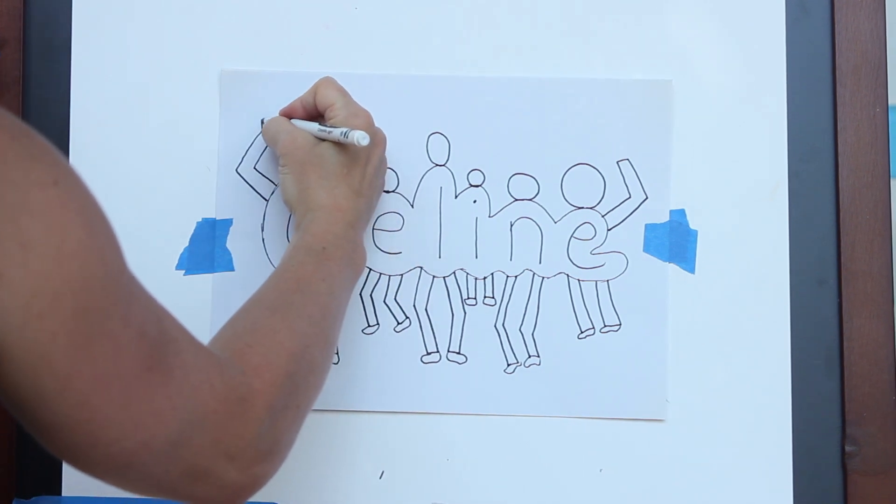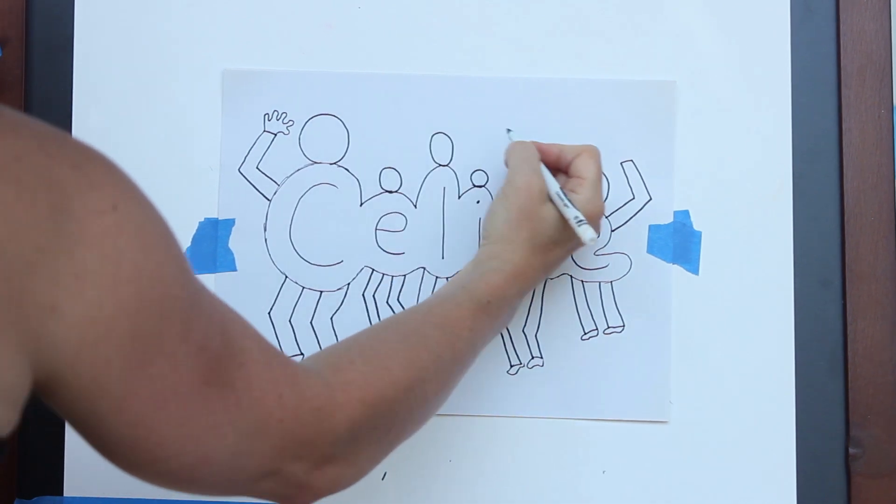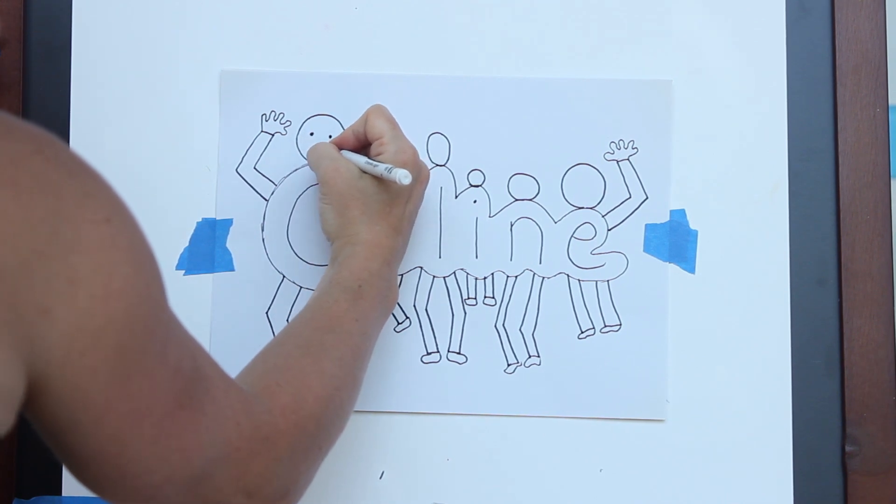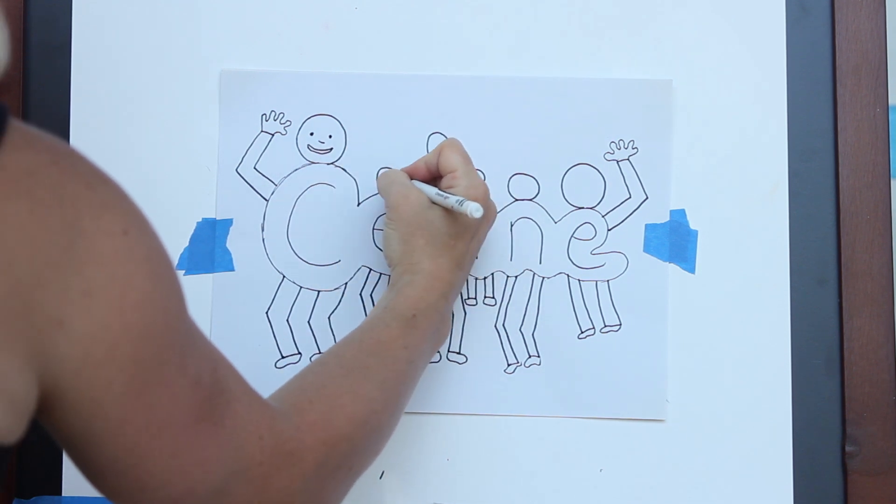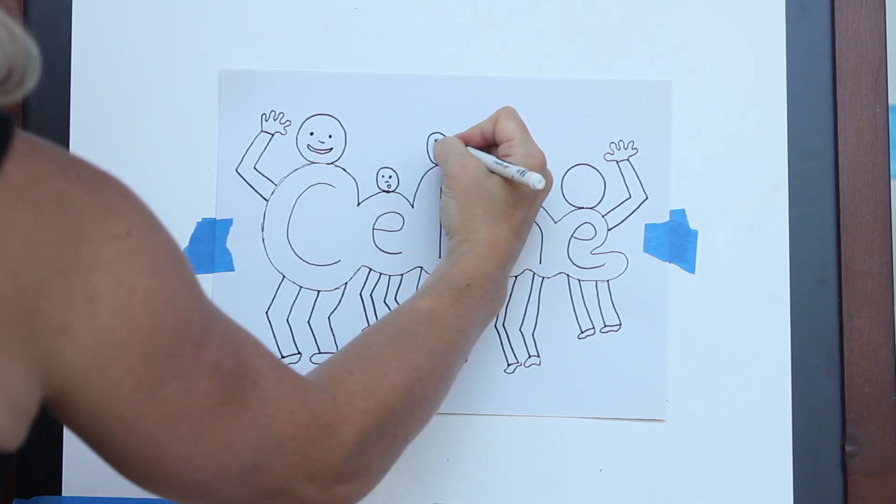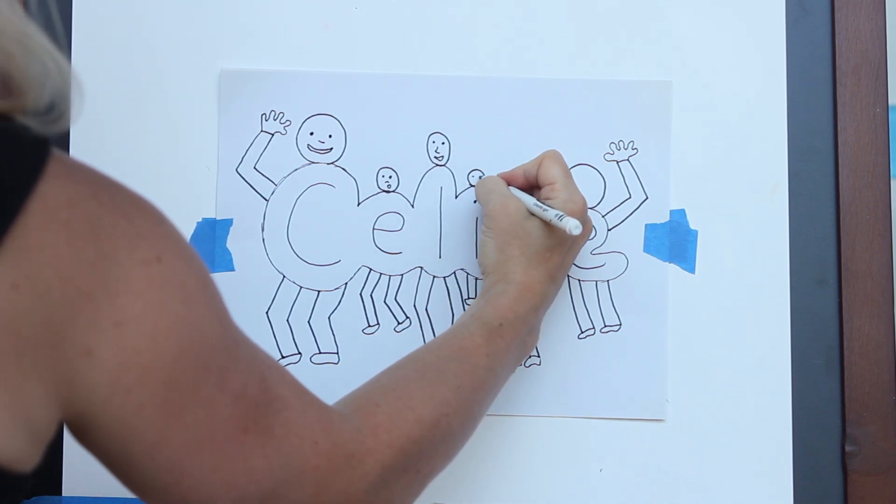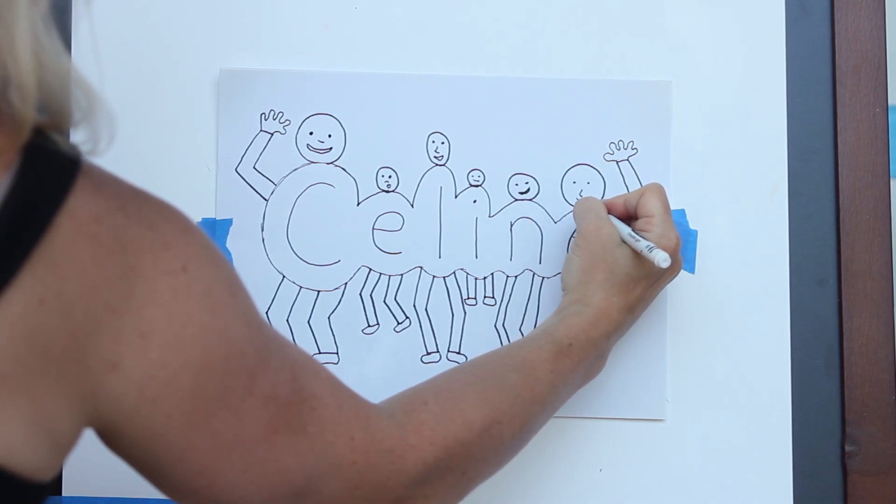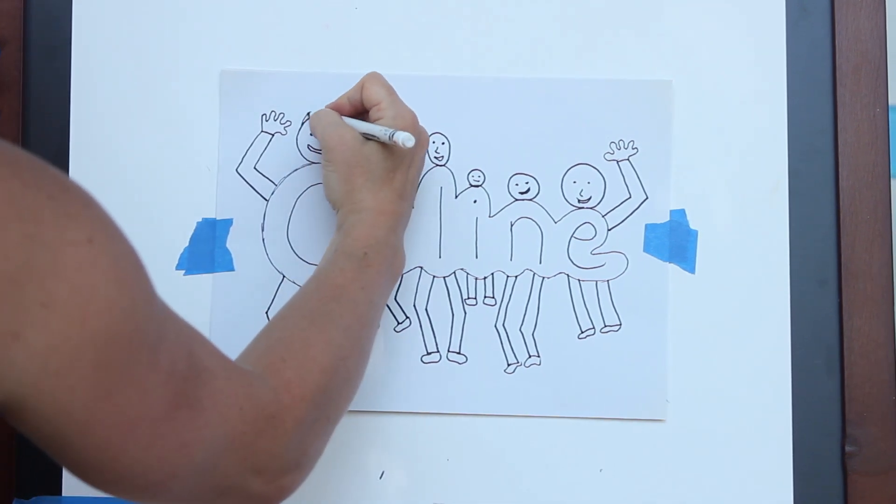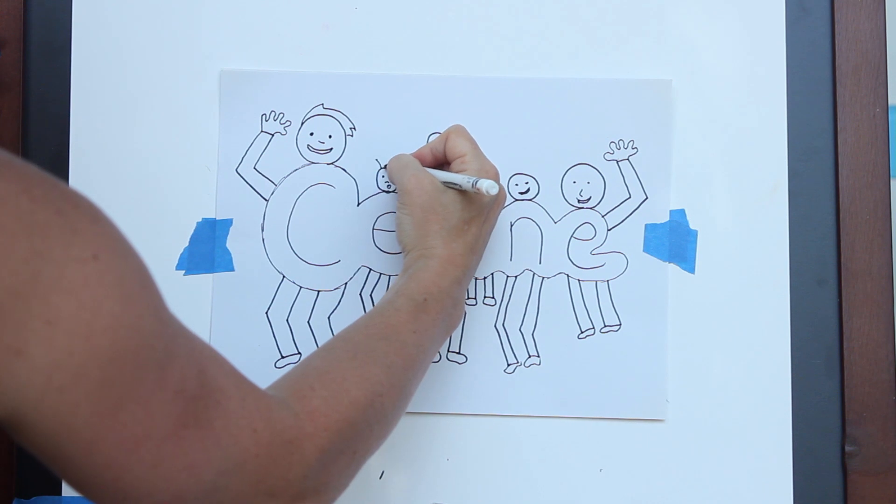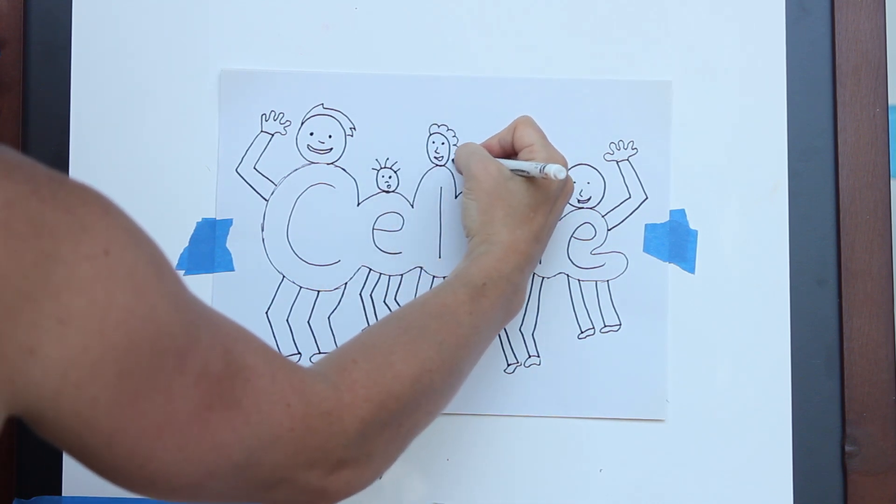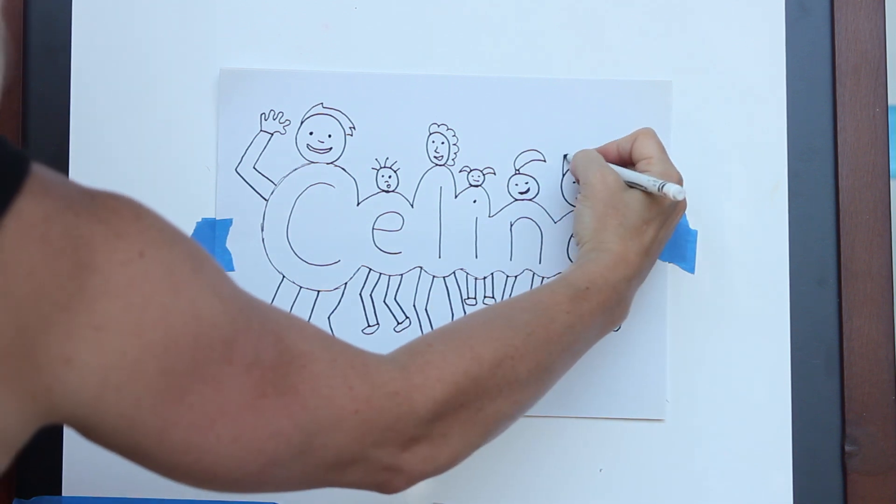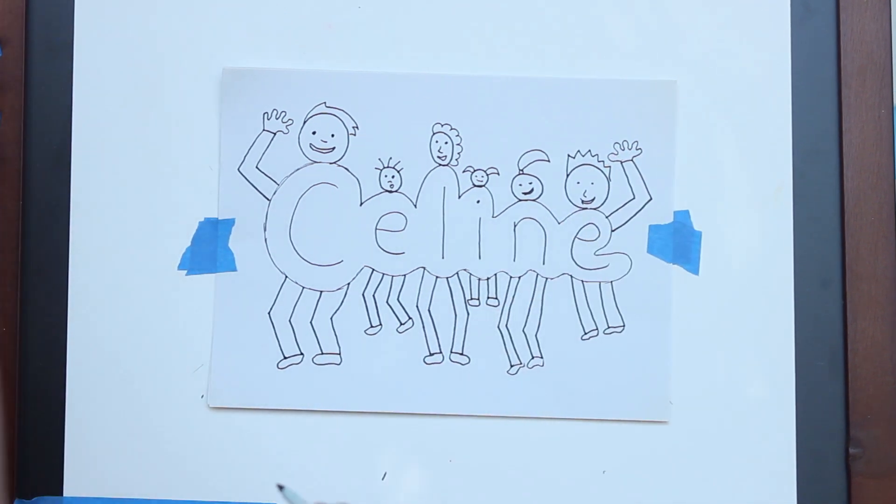Now what we can do, if you want to add detail, you can add fingers. Doesn't have to be perfect fingers. Notice mine are not perfect. You can add faces: eyes, nose, mouth. And you can add hairstyles if you want to. Look at that hairstyle.